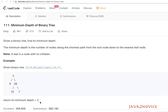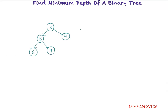So the minimum depth is two. Now we'll discuss our algorithmic approach. One of the simplest approaches to find the minimum depth of a given binary tree is by using level-order traversal. While doing level-order traversal, we will identify the first occurring leaf node. Taking this binary tree as an example, we'll start with node 10.